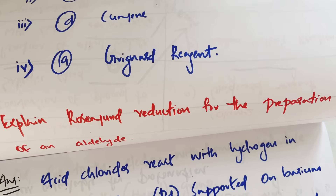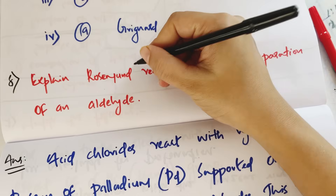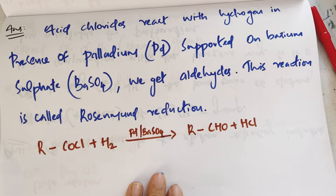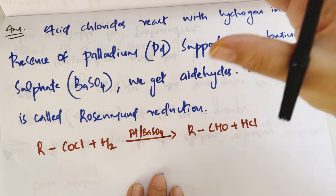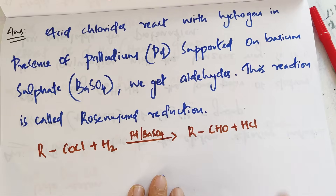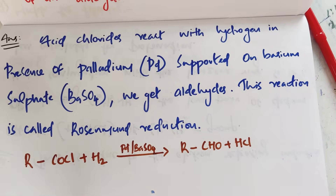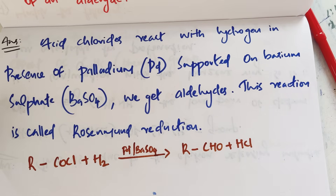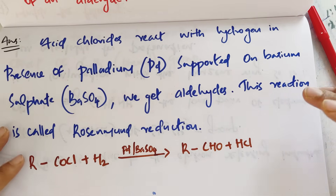Conversion of ketone to secondary alcohol uses Grignard reagent. Rosenmund reduction is also an important named reaction to remember.